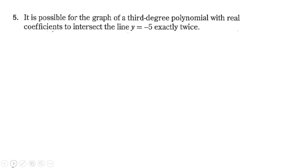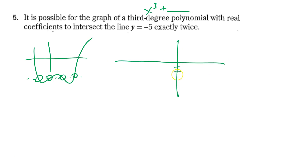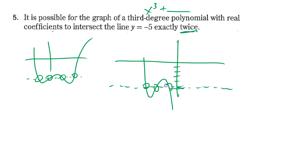Is it possible for the graph of a third-degree polynomial with real coefficients to intersect the line y = -5 exactly twice? This gets back to the wiggliness theorem — if a function crosses a horizontal line a certain number of times, the degree has to be at least that many. So here we have a third-degree polynomial; the wiggliness theorem says if it crosses two times the degree needs to be at least two, and a cubic qualifies.